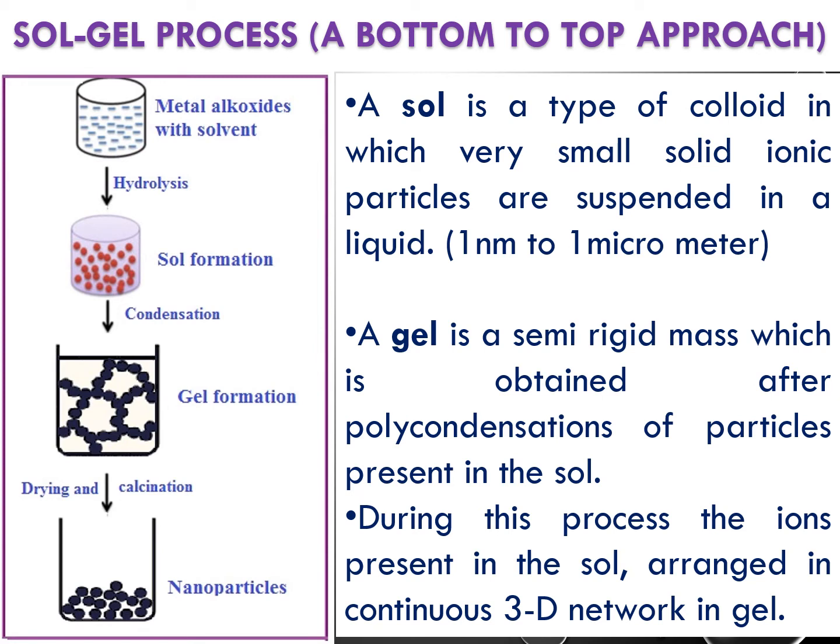A colloidal solution is formed when you add a metal precursor to a solvent. The solute molecules undergo a hydrolysis process, their particle size increases to more than one nanometer, and they form a colloidal solution. In this solution there are very small solid ionic particles — this is called the sol.